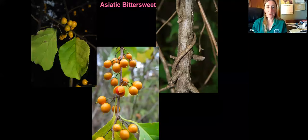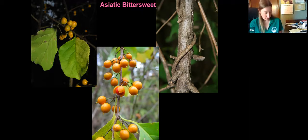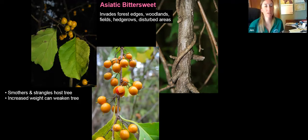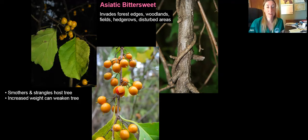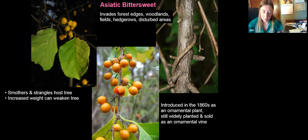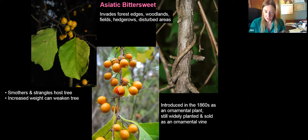Here's another invasive vine — Asiatic bittersweet. It has some pretty attractive fruits. It invades forest edges, woodlands, fields, hedgerows, and disturbed areas. It can smother and strangle the host tree just like Japanese honeysuckle, and the increased weight of this vine can also weaken the host tree. It has round leaves with eventually yellow fruit capsules that break open to expose the red berry inside, visible in the fall. The berries can be spread by birds like mockingbirds, blue jays, and starlings, as well as through root suckers. This plant was introduced in the 1860s as an ornamental and can still be found being sold in this country.